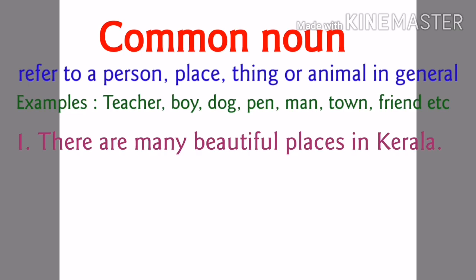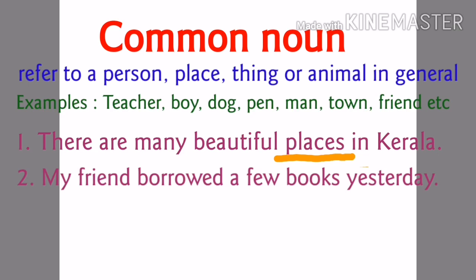Let's see a sentence: There are many beautiful places in Kerala — even Guruvayur, Trishur, Kochi — we call them as place. So place is a common noun. Next sentence: My friend borrowed a few books yesterday. In this sentence, the words friend and books are common nouns. You may have a friend in school or near your house, but we generally call them as friend. The word book can be a science book, maths book, drawing book or story book, but generally we call it as book. So that is also a common noun.